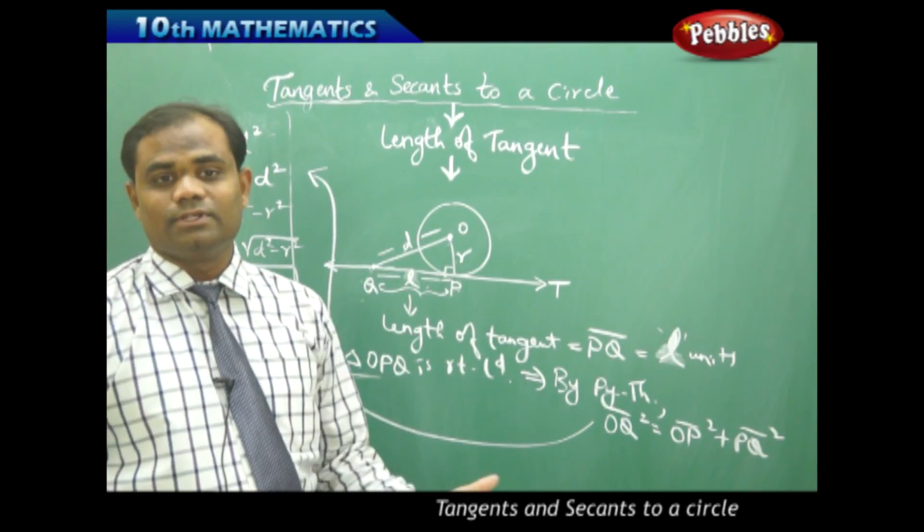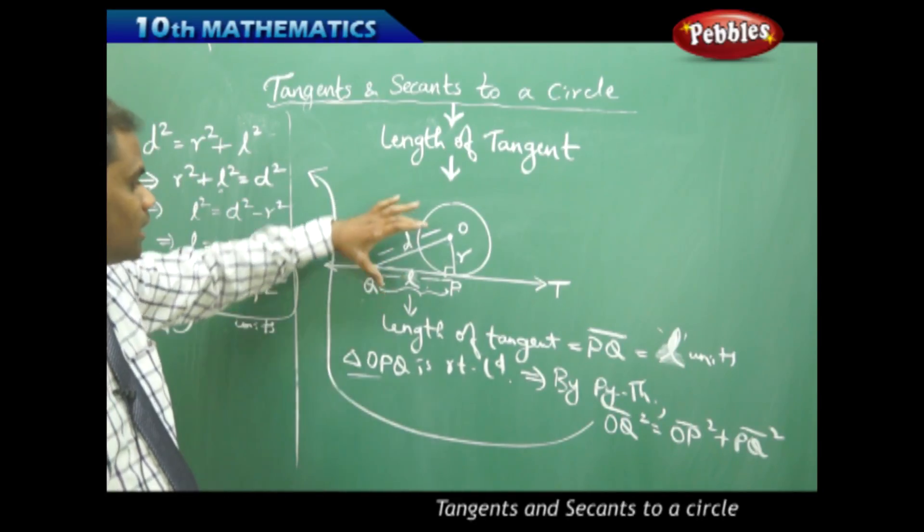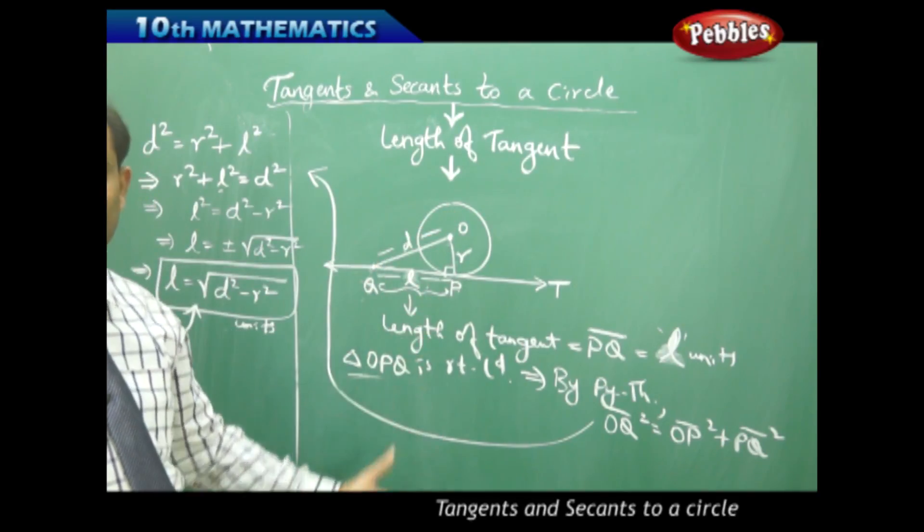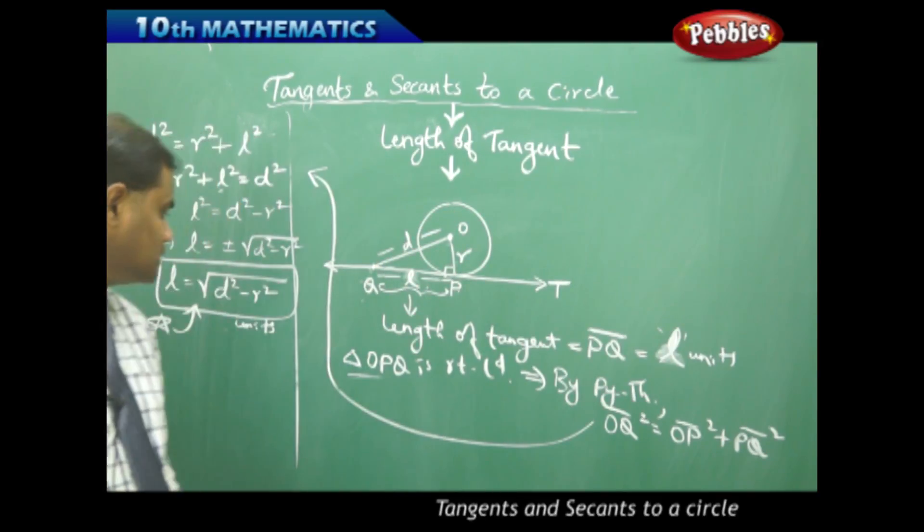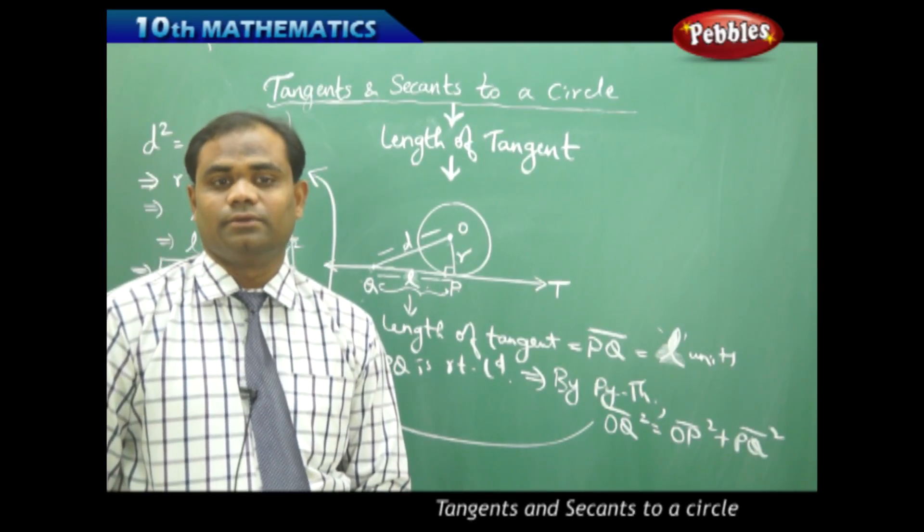...and R is the radius of the circle. So length of tangent can be found out if I know these two dimensions, then the length of tangent is quite easy using the formula root D squared minus R squared units.